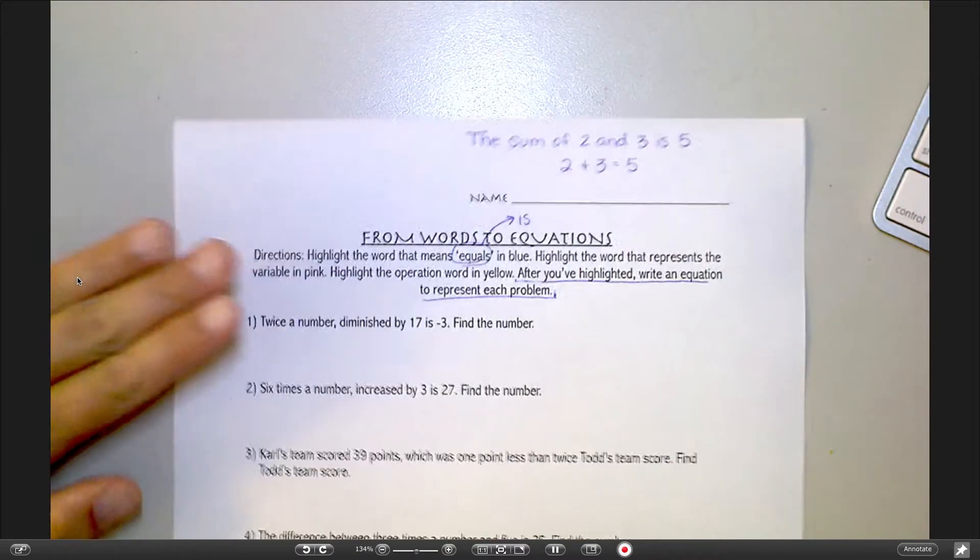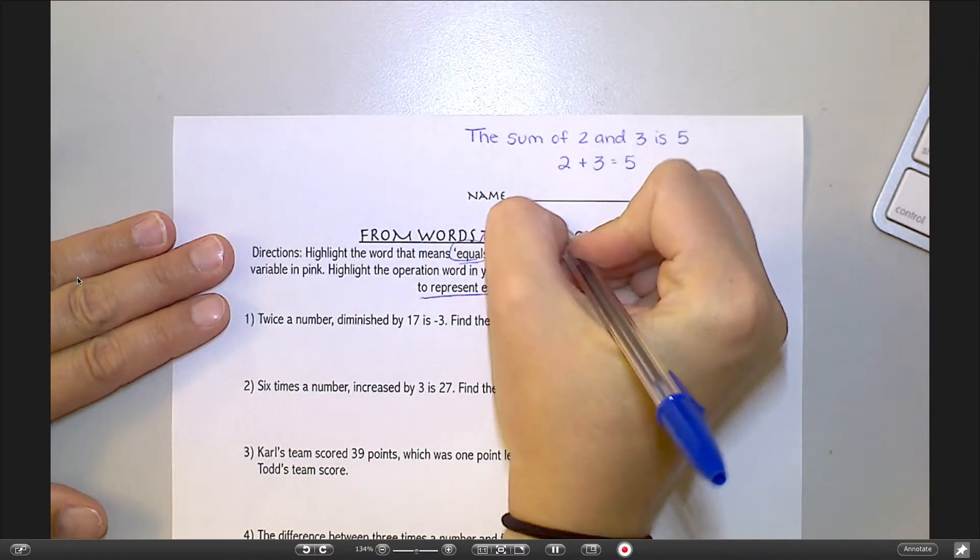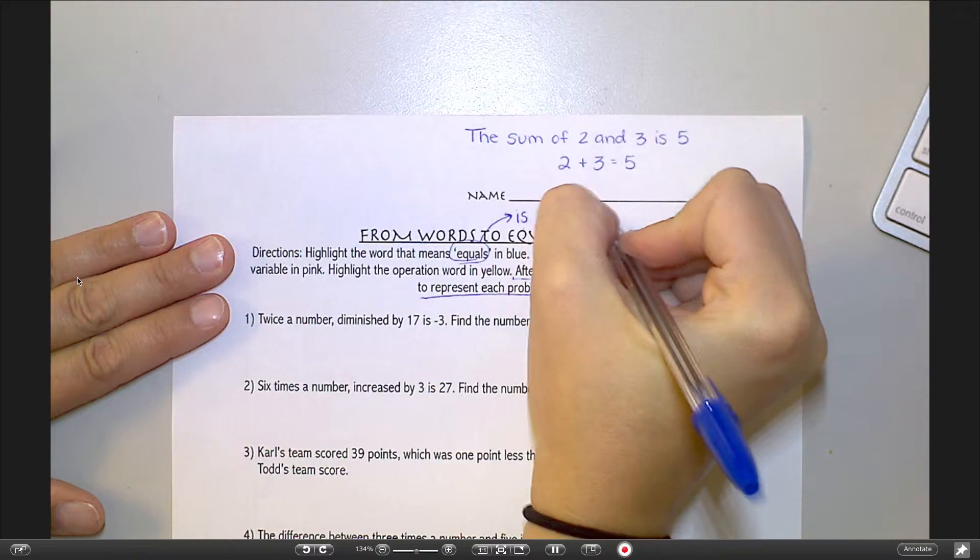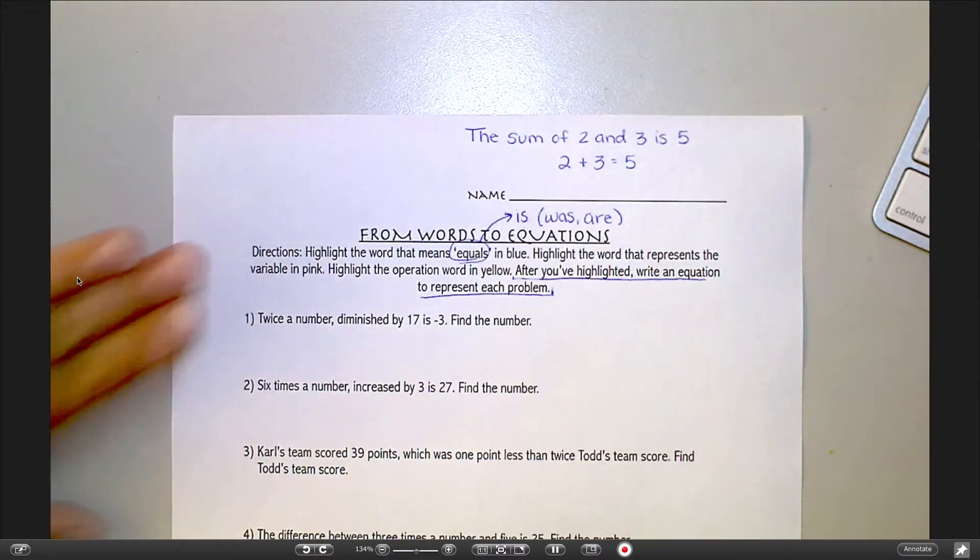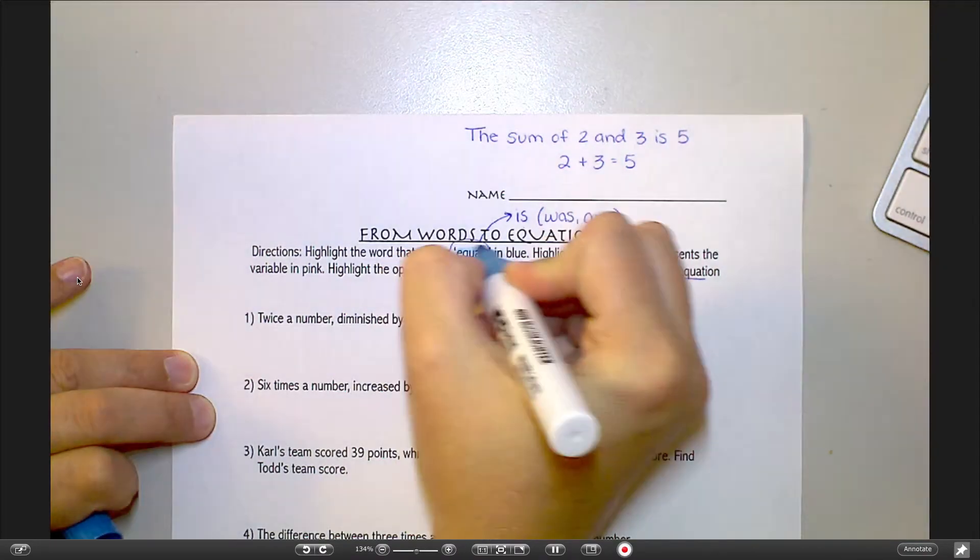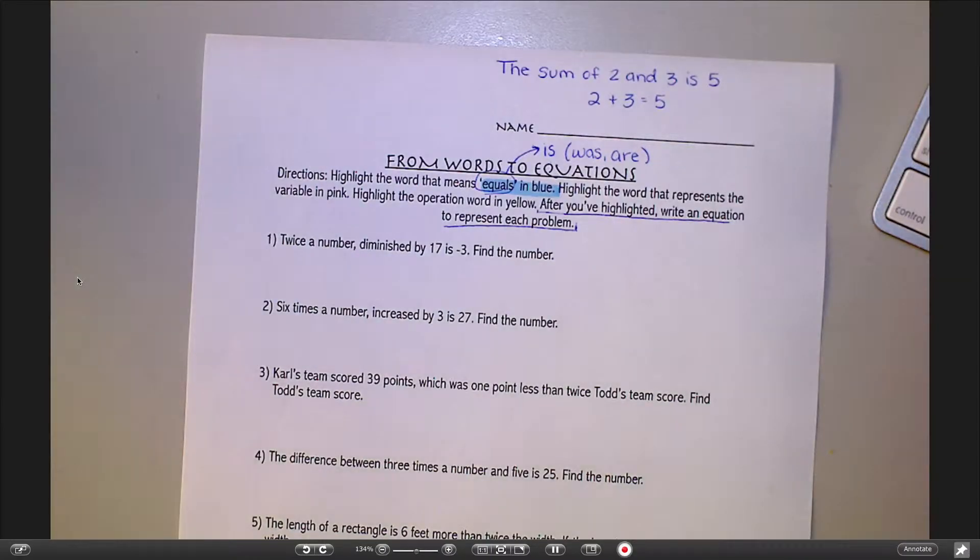The word that means equals is always is. Now is shows up a couple of different ways. If it's past tense, it's actually the word was. And if it's plural, it's the word are. So these words are really just is in disguise. Your first direction here is to highlight the word that means equals in blue.